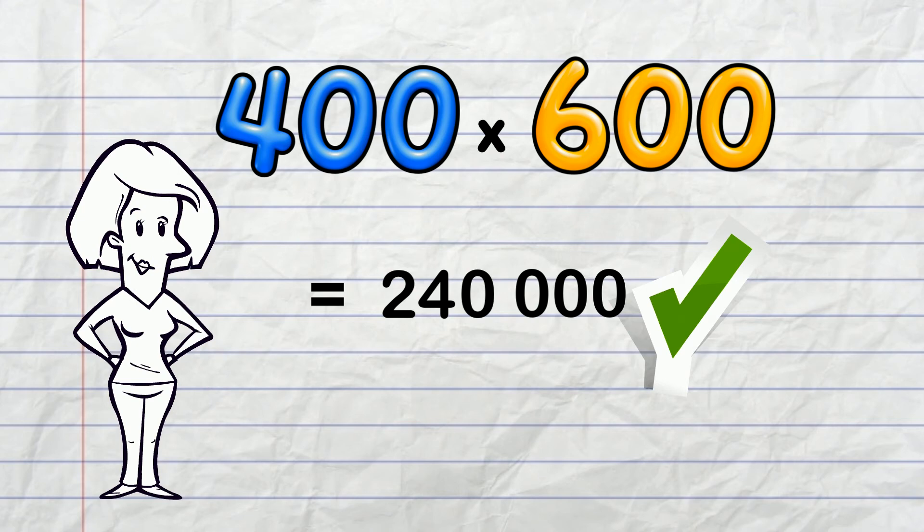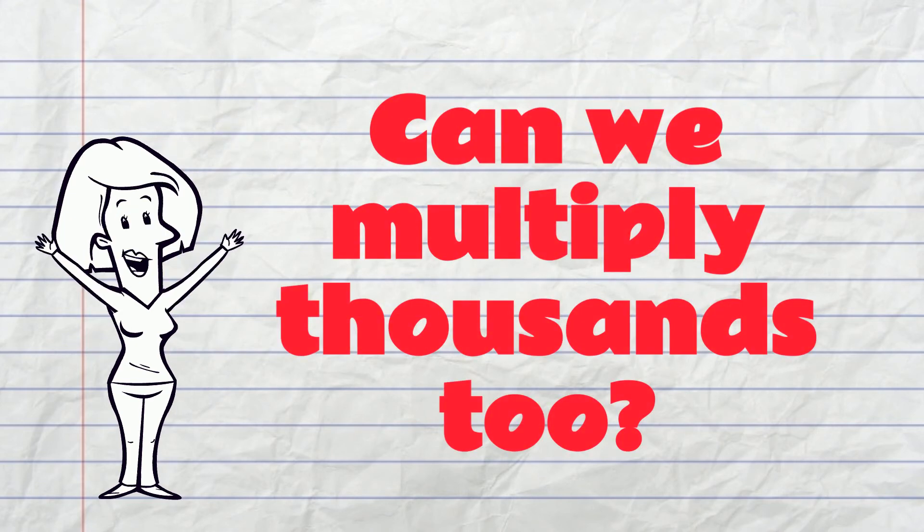That was easy, wasn't it? Can we multiply thousands too this way? You got it!